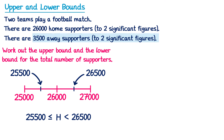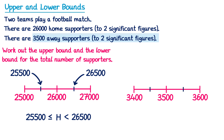Now let's do the same for the away supporters. This one's 3,500 and also to two significant figures. Below that would be 3,400 and above 3,600. Halfway in between these gives us 3,450 and 3,550. So the error interval for the away supporters is between 3,450 and 3,550.